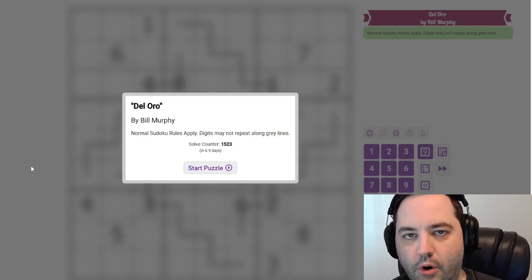Hi everyone, this is the Gats Walkthrough for August 6th. I'm Philip Newman. Today I'm solving Del Oro by Bill Murphy.